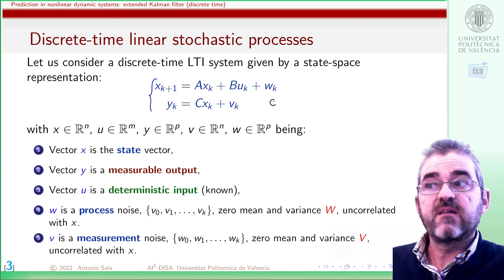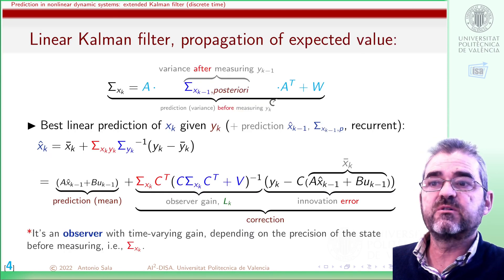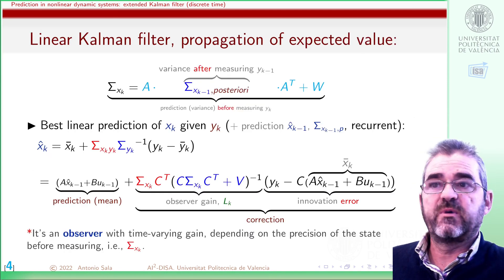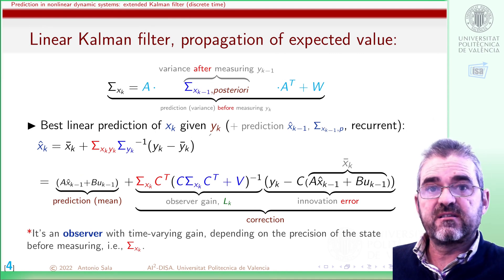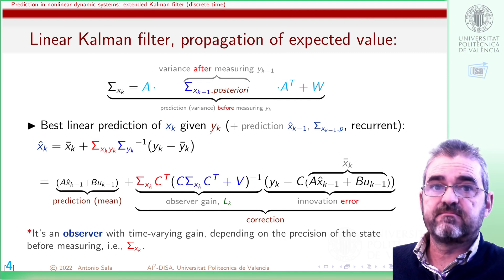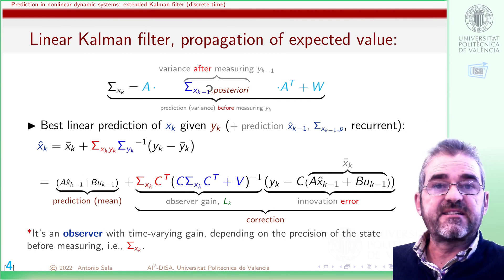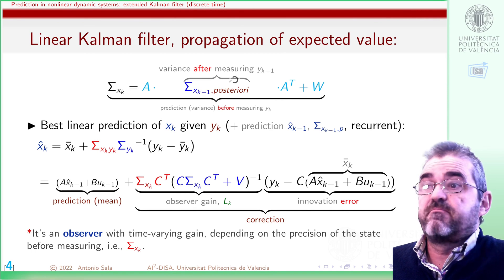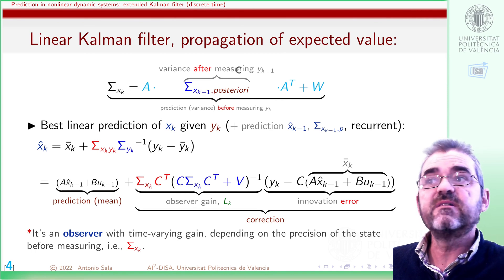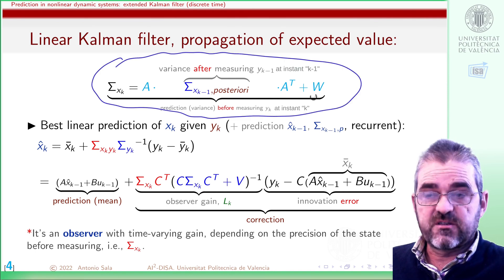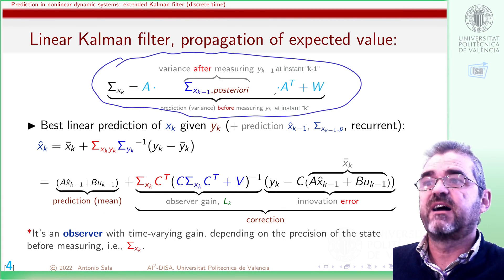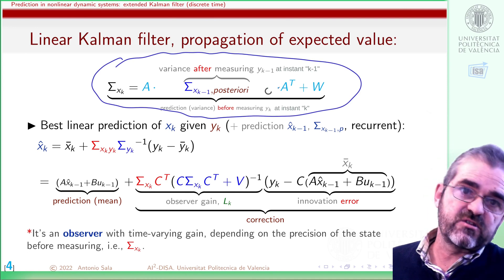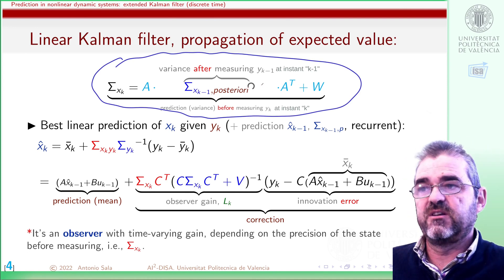So when we have this linear time invariant system, the Kalman filter equations are the following ones. We have a propagation of expected value — propagation of means — in which if we are at time instant k and we computed our variance estimate after the previous measurement, this expression updates the variance accumulating process noise and multiplying by A squared, because the variance is the mean of x squared.